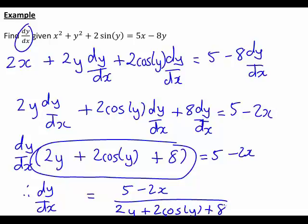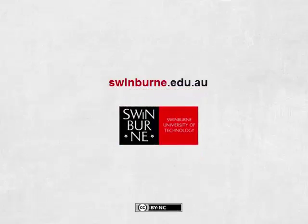So that is an example of implicit differentiation. The main things to remember are: when you differentiate a function of y with respect to x, it must be the derivative of the function with respect to y times dy/dx — that is why that happened with the y², the 2sin(y), and the −8y. Once we have differentiated term by term with respect to x, we then rearrange to make dy/dx the subject.